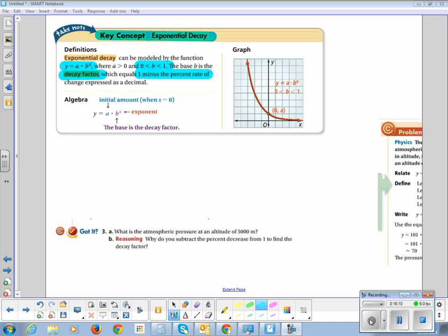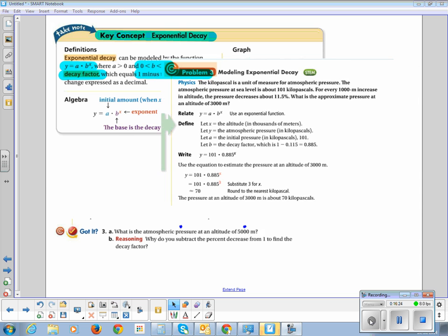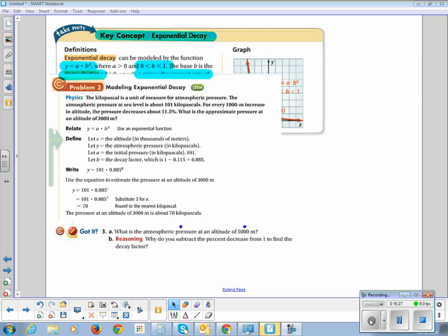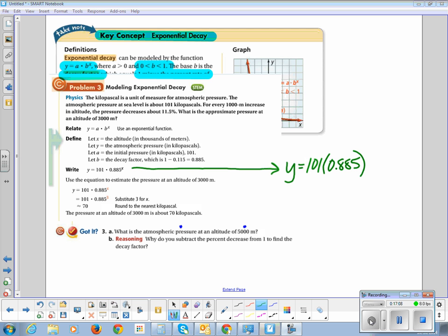So what we're going to do is we're going to find atmospheric pressure at an altitude of 5,000 meters. And that comes from this problem 3. Let's read. The kilopascal is a unit of measure for atmospheric pressure. The atmospheric pressure at sea level is about 101 kilopascals. For every 1000 meter increase in altitude, the pressure decreases 11.5%. What is the approximate pressure at an altitude of 3,000? And they found that our equation is y equals 101 because that's what it is at sea level, at zero. And then times 0.885 because that is what you get when you subtract 1 minus 11.5%.